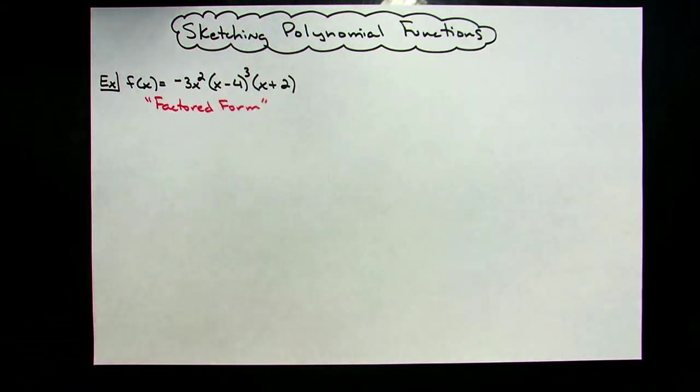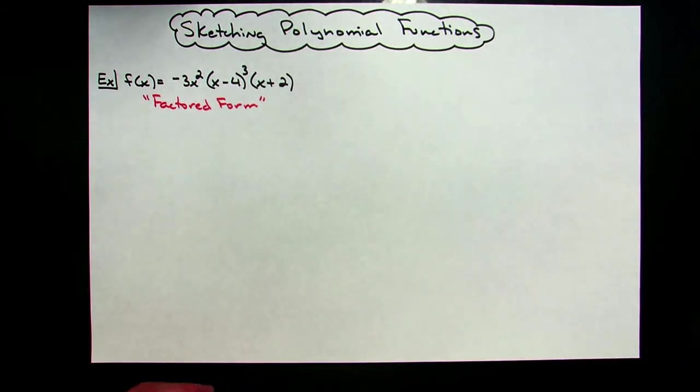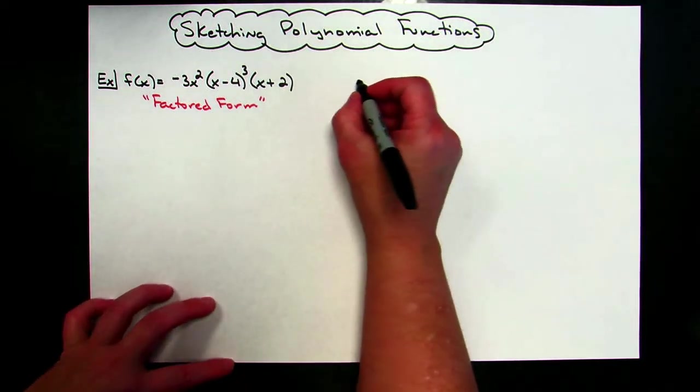All right, now, to be able to sketch a polynomial function, you really do need a lot of background information. You've got to know how to find the end behavior, and that entails looking at the degree and the leading coefficient. You've got to be able to find the roots of this polynomial function, and you've got to know a little bit about multiplicity. All of which, as I go through each of the steps, it'll be a nice little review of those concepts.